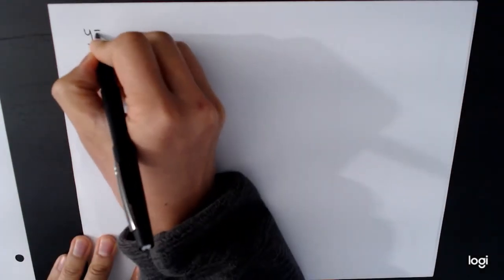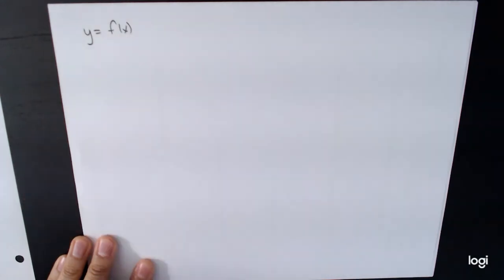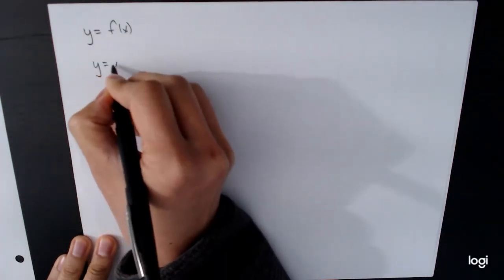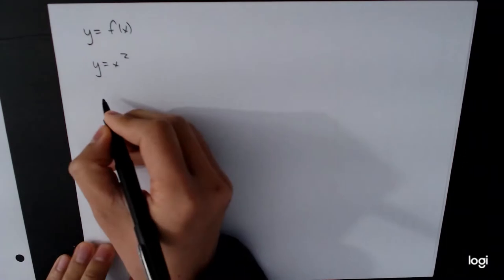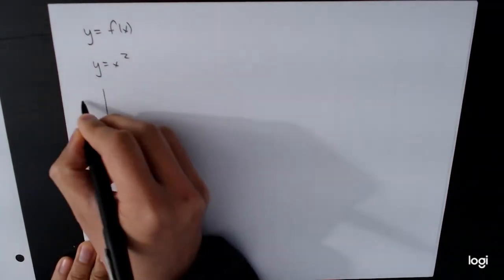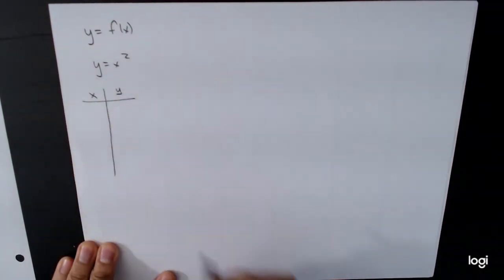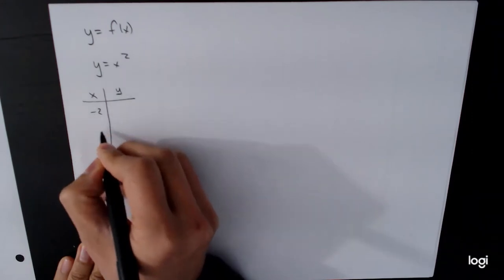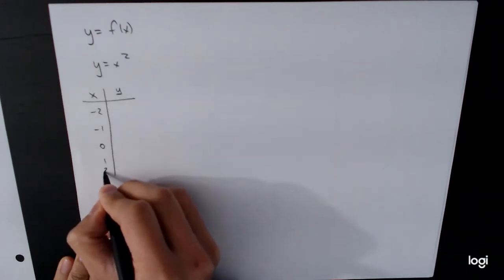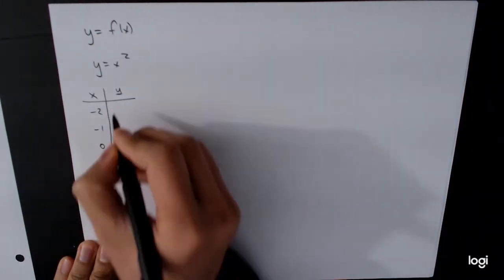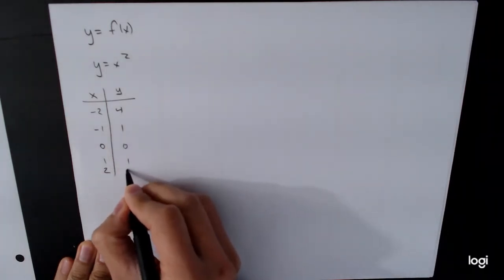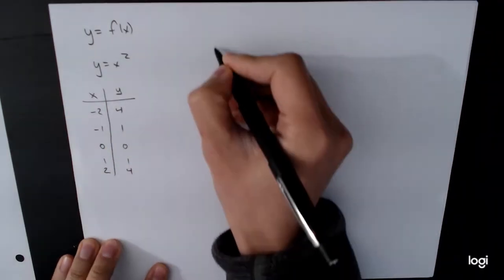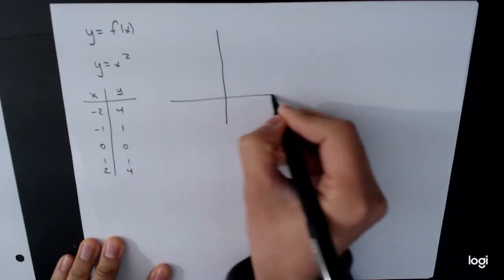So it used to be the case that we would have something like y equals f(x). For example, we'll look at y equals x squared. And if we wanted to graph this, the way that we did it way back at the beginning was we told you to pick some x values, plug it into the formula and calculate the corresponding y values.